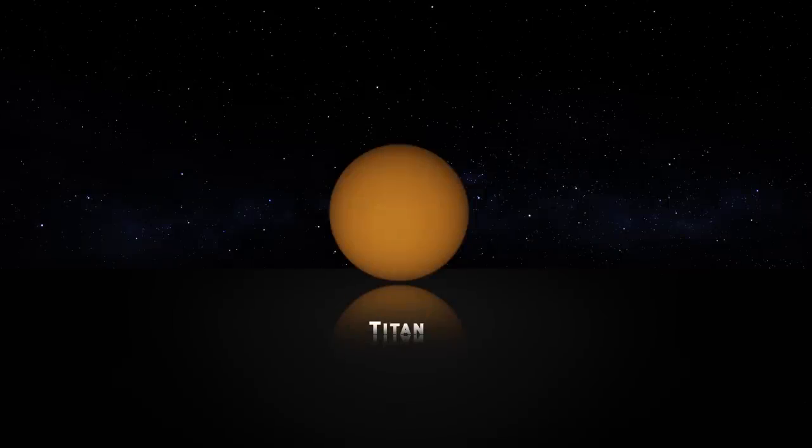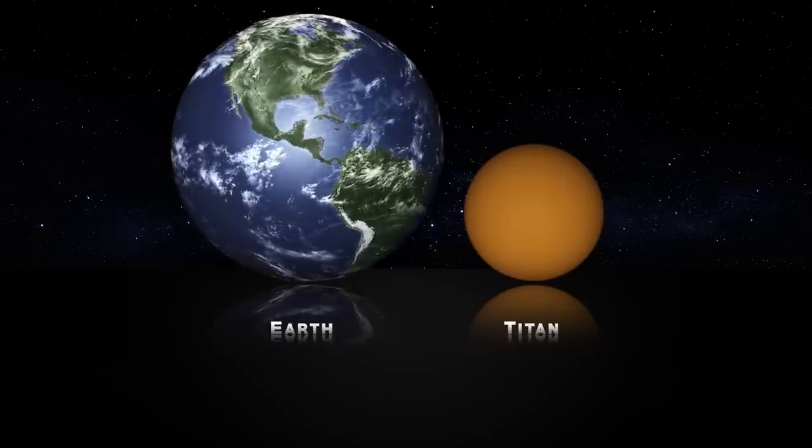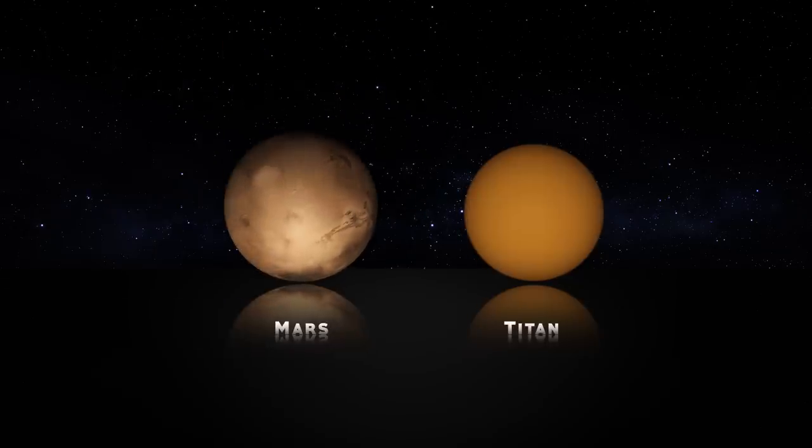Titan's diameter of 5,150 kilometers is about half the diameter of Earth and nearly as large as Mars, making it the second largest moon in the solar system after Jupiter's Ganymede.